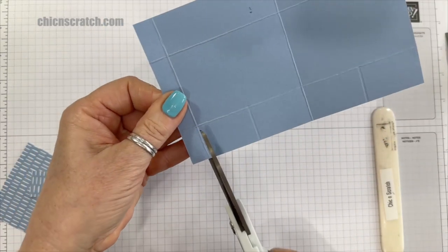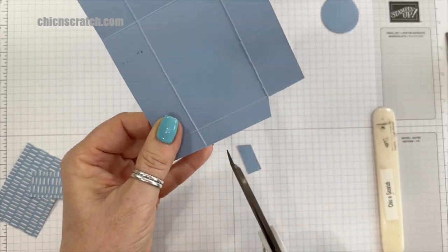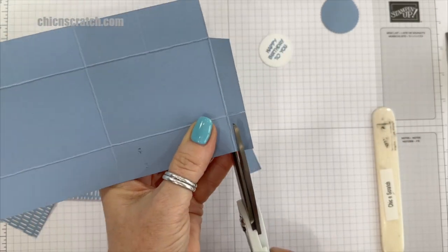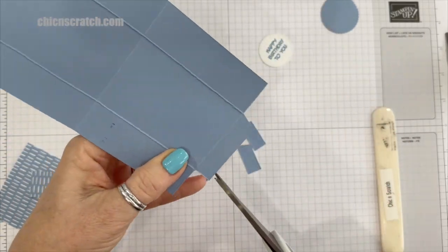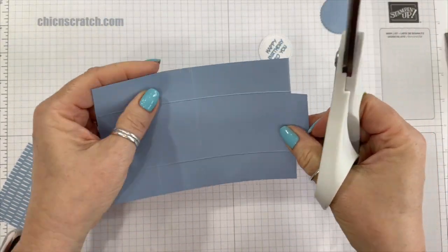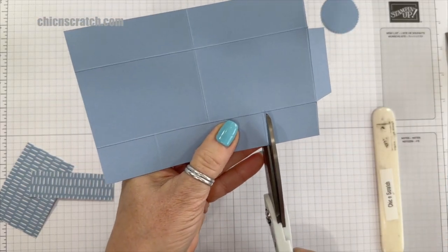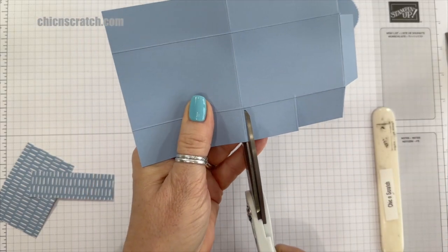The next step is we're going to remove these corners, and then we're going to, this is the bottom, so we're going to cut up to the score line on each of these.